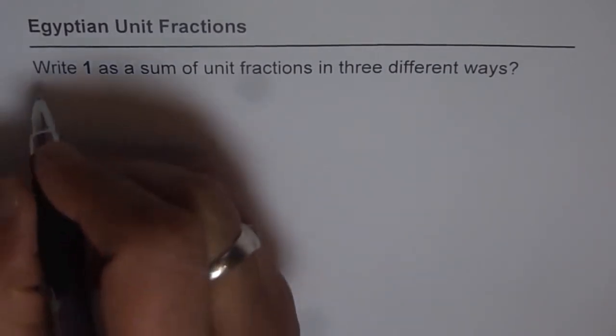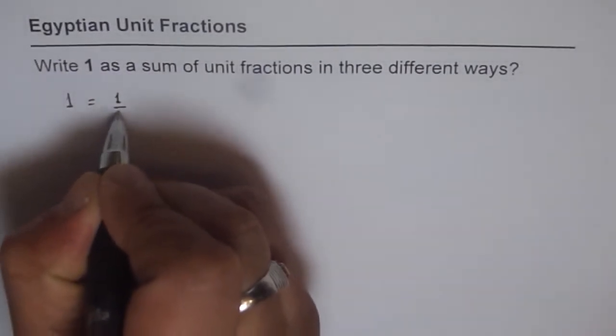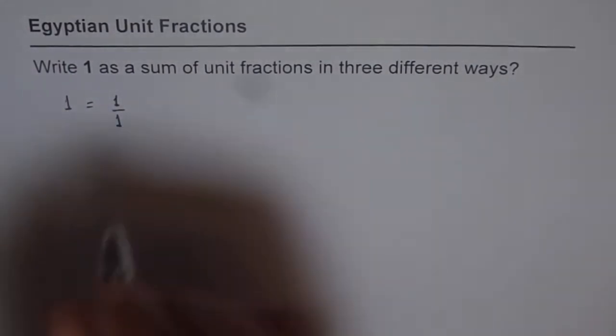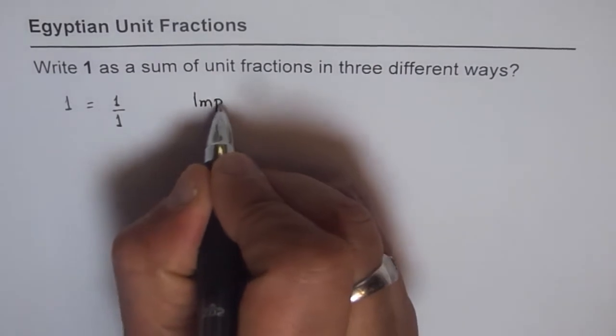Number 1 could be written as 1 over 1, right? So 1 over 1 itself is a unit fraction, but we call this improper unit fraction.